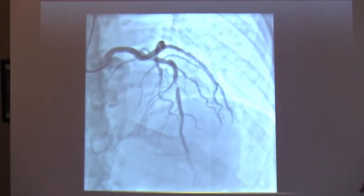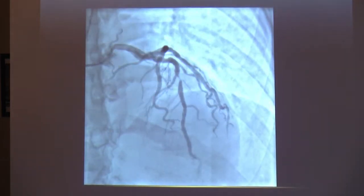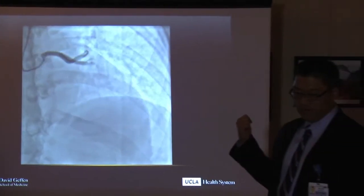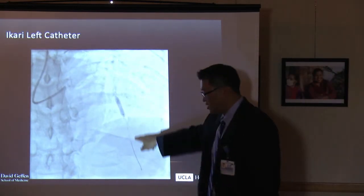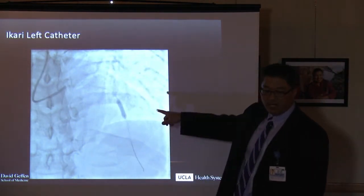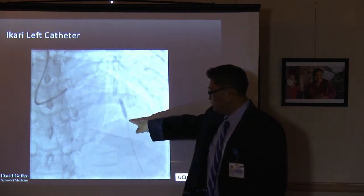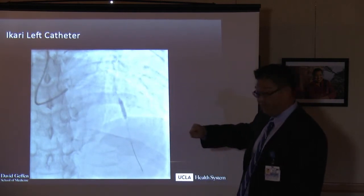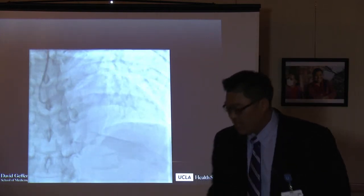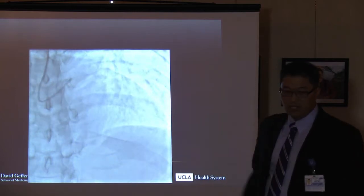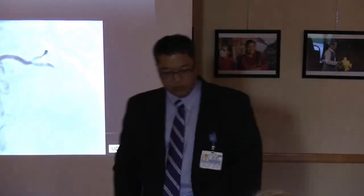Going back to my tennis player — he had this blockage in his left anterior descending artery, the LAD. We can actually fix this from the wrist approach too. Here we have a wire going down the artery. Once we have a wire in the artery, we can advance our balloon and stent to fix the blockage. Here's a balloon used to inflate a stent, now placed in the middle of the LAD. When we take our angiogram picture, you see nice flow — that blockage has gone away.